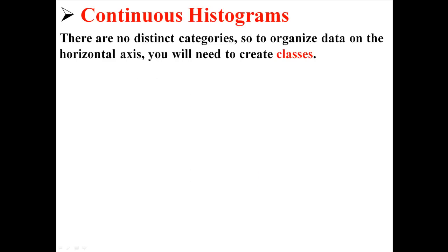There are no distinct categories here. Like before we had 1, 2, 3, 4, and 5. It was easy, but here we have many more values. If we were to create a histogram, it would be giant. So what we're going to need to do is organize the data on the horizontal axis and create something called classes.